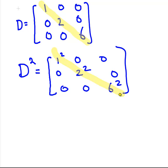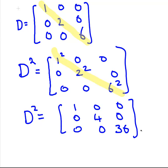So, for example, D squared is simply 1, 0, 0, 0, 4, 0, 0, 0, 36. Simple as that. D cubed is something similar. It's 1 cubed, 2 cubed, and 6 cubed, and so on. Now, that is interesting enough.